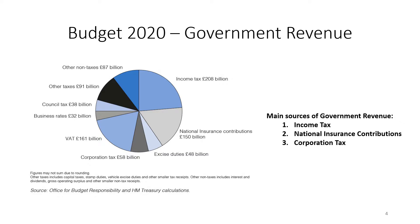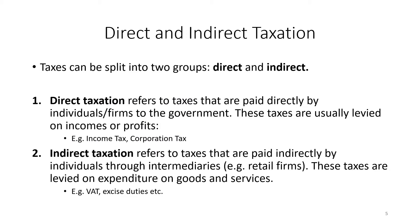This is a prediction of government revenue for 2020. We can see from the pie chart that the main sources of government revenue are income tax, national insurance contributions, corporation tax, and VAT. VAT is another big contributor to government revenue.